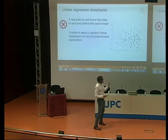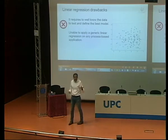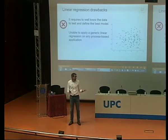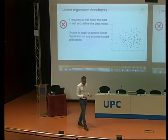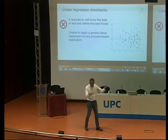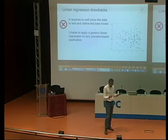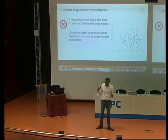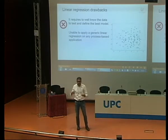On the other side, you need to know the data pretty well. Linear regression works well for something like predicting the price of apartments in a neighborhood with different surrounding data. But if you don't know the data, it's almost impossible to make it work in a generic way for any process-based application.